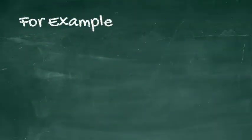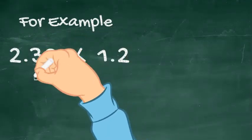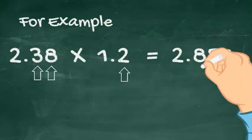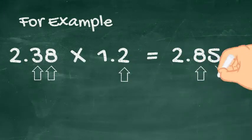So, for example, 2.38 times 1.2 will produce a number with three places of decimal, which is 2.856.